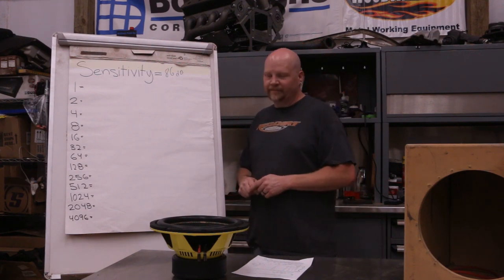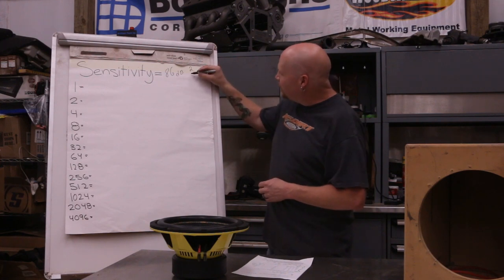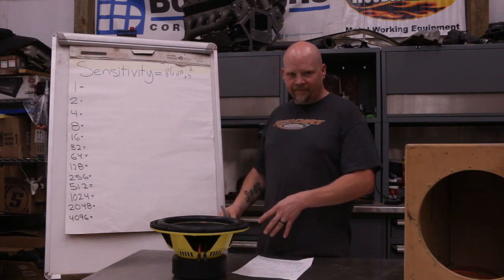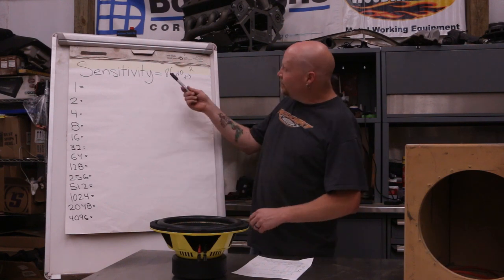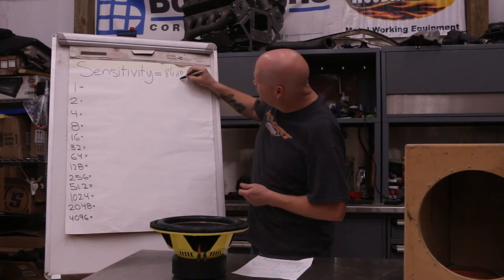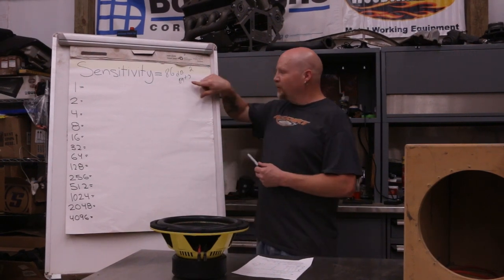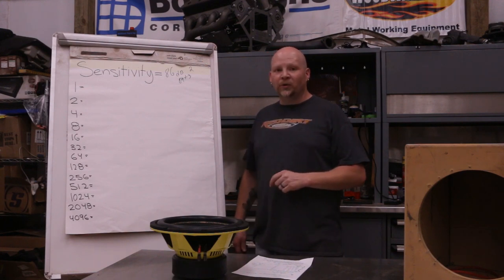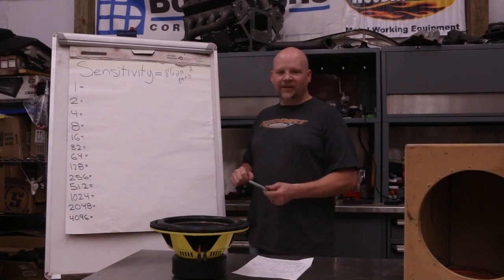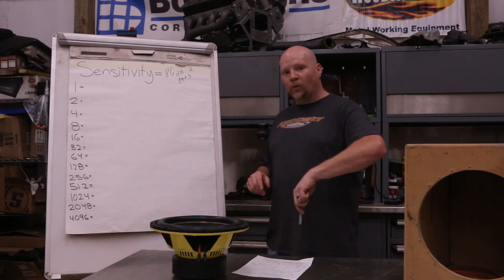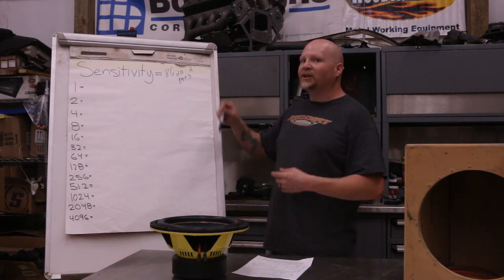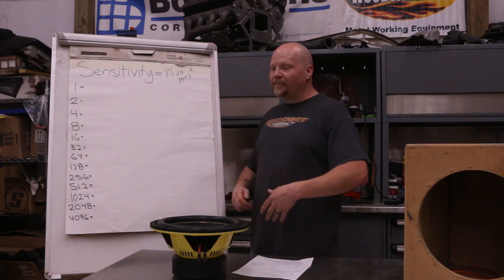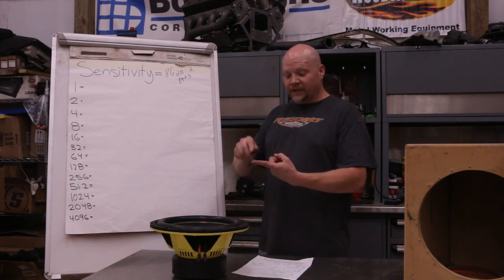We have 86 dB for one woofer. If we add two woofers, that's plus 3 dB - every time you double your cone area you add 3 dB. So two of these subwoofers would be 89 dB. If you add three, it's not going to take you to 92 - it's going to take you to 90.5, because you didn't double it, you just added one. If you added two more for four total, then you'd add another 3 dB. That's why it's so difficult to get louder once everything is powered up.